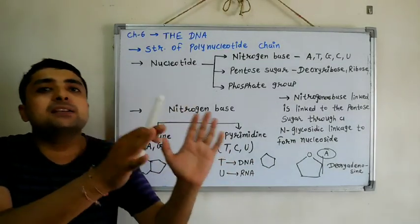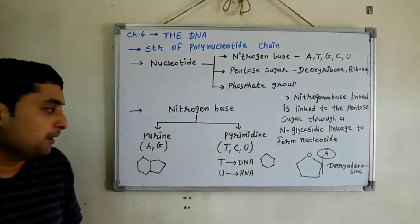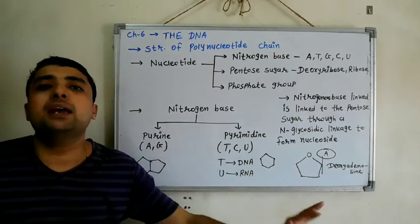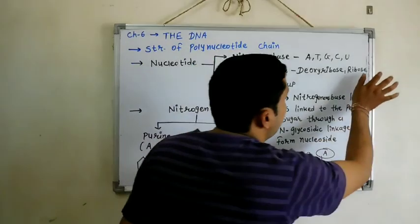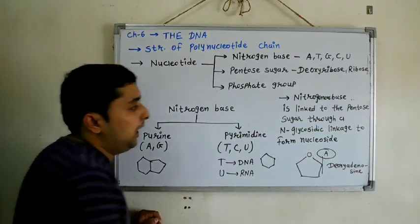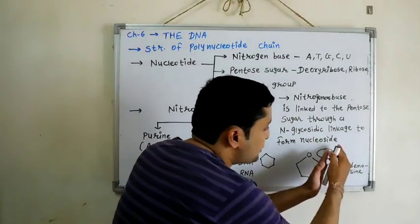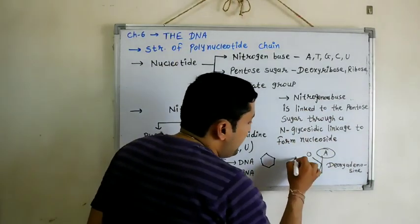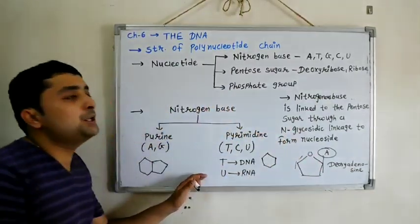Thymine is only present in DNA, whereas uracil is only present in RNA. Thymine which is in DNA is absent in RNA. Uracil which is in RNA is absent in DNA. Then the nitrogenous base is linked to the pentose sugar through an N-glycosidic linkage to form nucleoside. That is, the attachment of pentose sugar with nitrogenous base combined forms nucleoside. If we attach a phosphate group here, then it synthesizes nucleotide. But here we are talking about nucleoside.